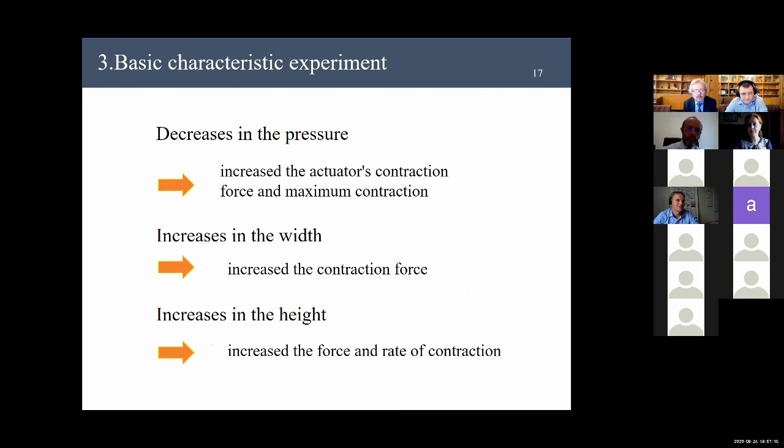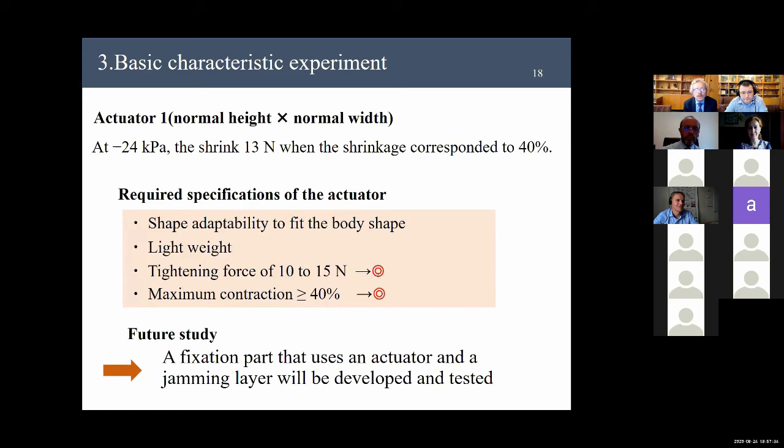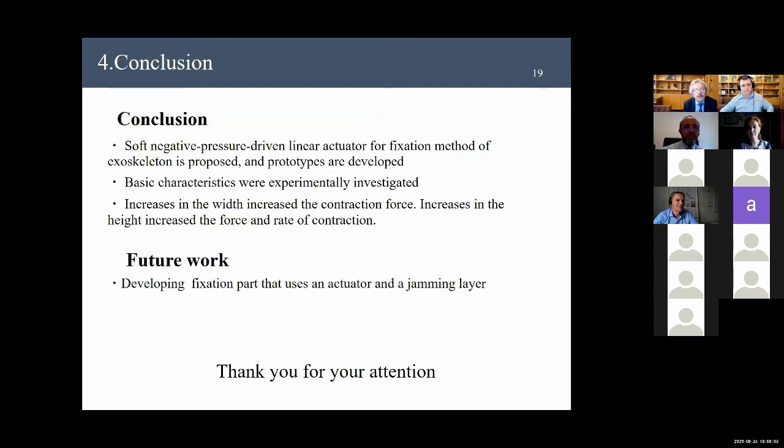In summary, the increase in pressure increases the actuator's contraction force and maximum contraction. Thus, increase in the width increases the contraction force, and increase in the height increases the force and the rate of contraction. So, actuator 1, which is normal height and normal width, at minus 24 kPa applied to the actuator, the shrink is 13 N when the shrinkage corresponds to 40%. It meets the required specification of the actuator in terms of the tightening force and the maximum contraction. In the future, the fixation part will be developed and tested. The conclusion and feature work are like this. Thank you for your attention.